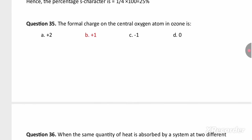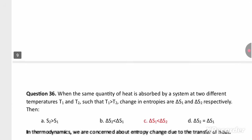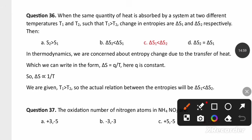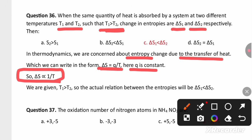The formal charge of the central oxygen in ozone is +1. Next, when the same quantity of heat is absorbed by a system at two different temperatures T1 and T2 where T1 > T2, the entropy change ΔS = Q/T, so ΔS is inversely proportional to temperature. Because T1 > T2, the entropy ΔS2 is greater than ΔS1. Option C is the right answer.